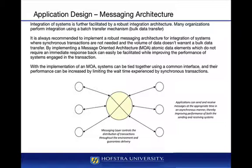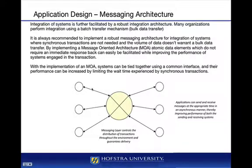A critical feature of this messaging architecture is that it is asynchronous. The system on the left side can put something onto the queue and continue processing without waiting for an acknowledgement from the other system. In contrast, a synchronous approach would require sending directly to System B and waiting for a response — if that response never comes because the system is down, no further processing can occur. This messaging layer provides an easy way to distribute transactions asynchronously, improving performance of both systems.